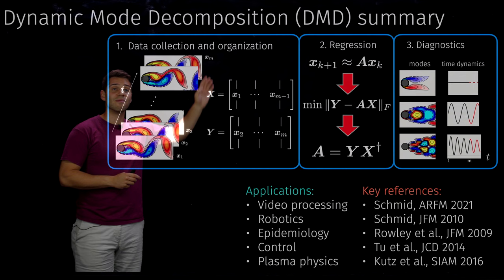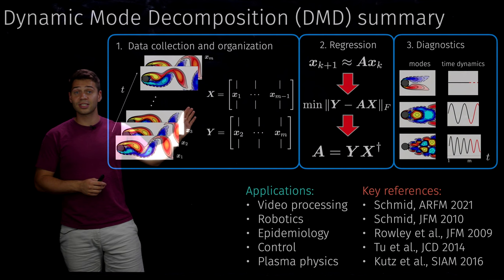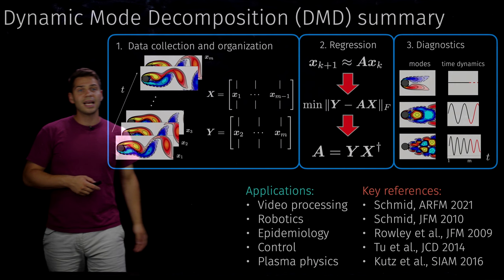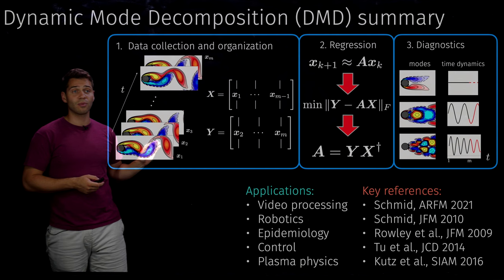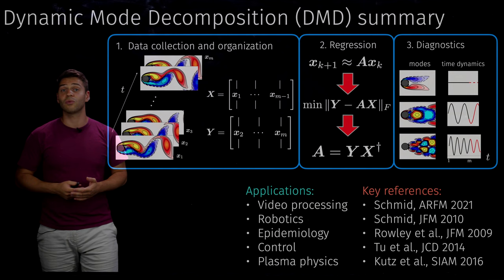We take those M snapshots and arrange them into two matrices: an X matrix and a Y matrix. The columns are just the snapshots at different times arranged sequentially. The difference between Y and X is simply that the columns of Y are the columns of X shifted one time step forward.